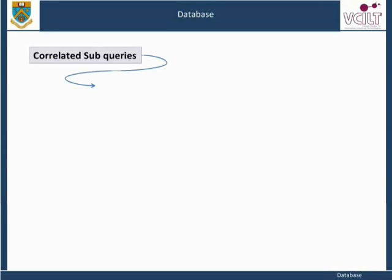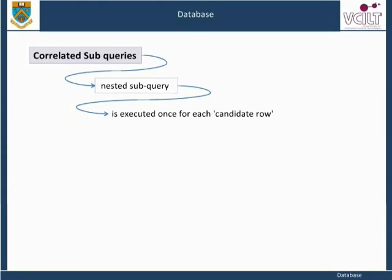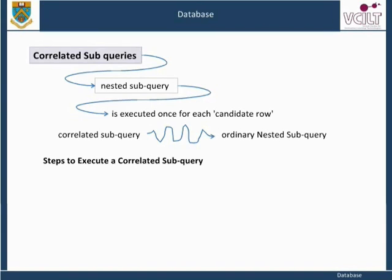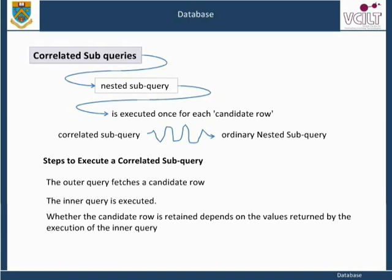A correlated sub-query is a nested sub-query which is executed once for each candidate row considered by the main query, and which on execution uses a value from a column in the outer query. This causes the correlated sub-query to be processed in a different way from the ordinary nested sub-query. With a normal nested sub-query, the inner SELECT runs first and executes once, returning values to be used by the main query. A correlated sub-query, on the other hand, executes once for each candidate row to be considered by the outer query — the inner query is driven by the outer query. The steps to execute a correlated sub-query are: the outer query fetches a candidate row; the inner query is executed using the value from the candidate row fetched by the outer query; whether the candidate row is retained depends on the values returned by the execution of the inner query. Repeat until no candidate row remains.